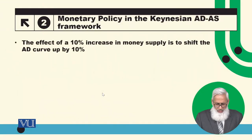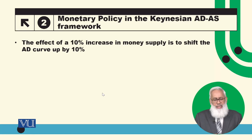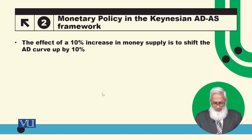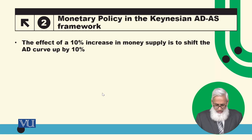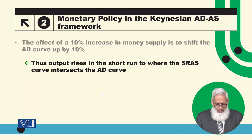The effect of a 10% increase in money supply is to shift the aggregate demand curve up by 10%. Thus, output rises in the short run.